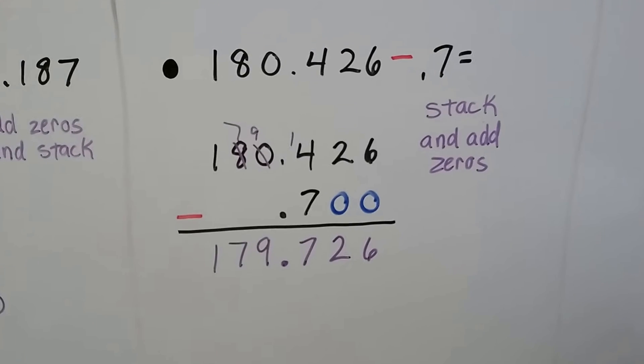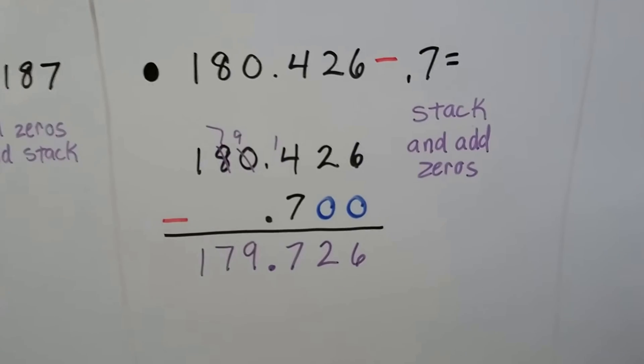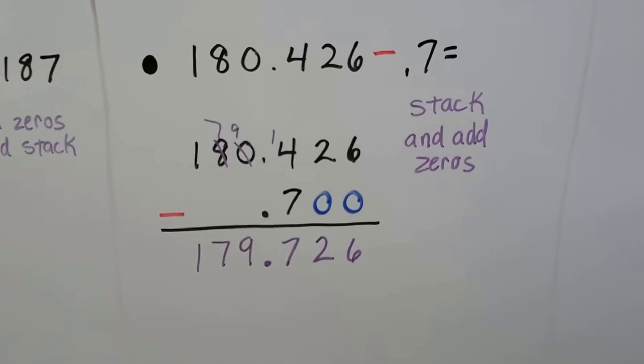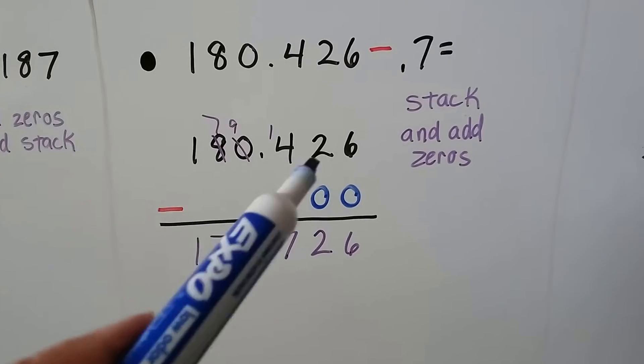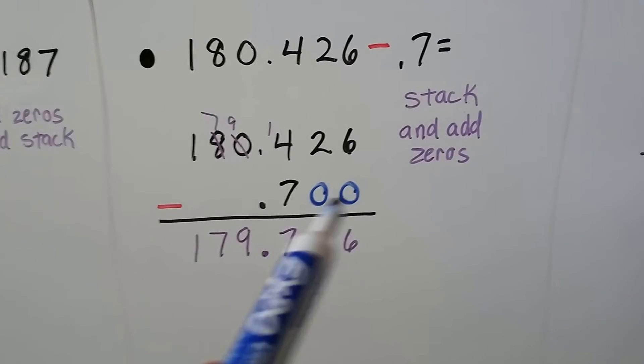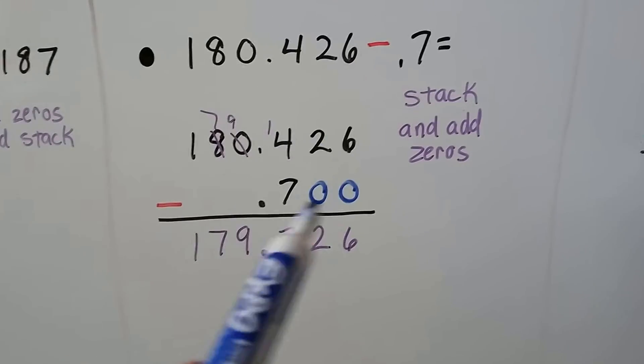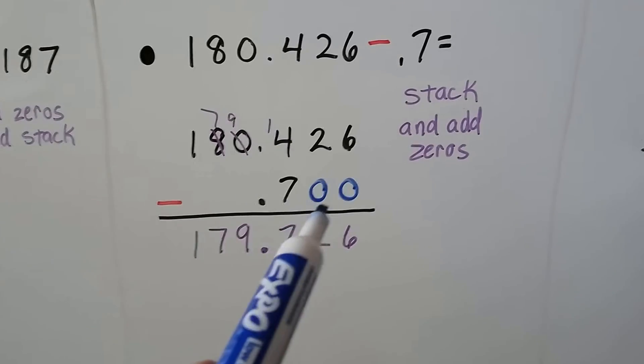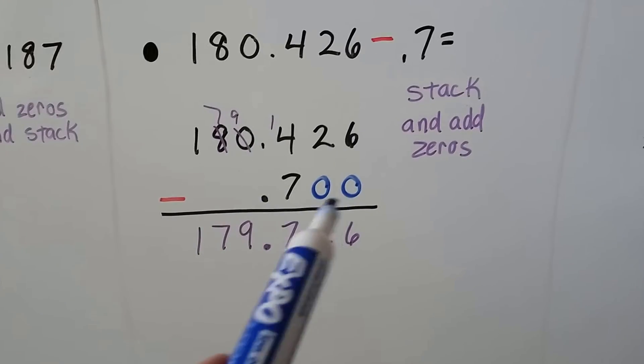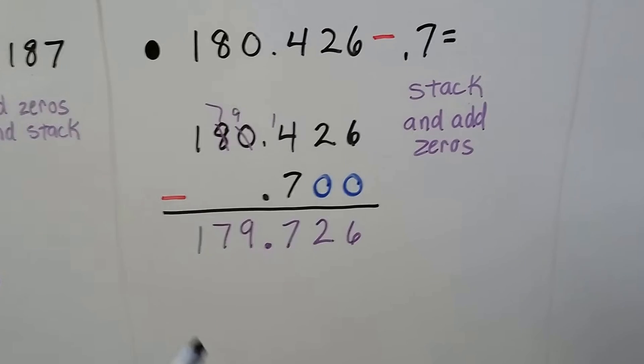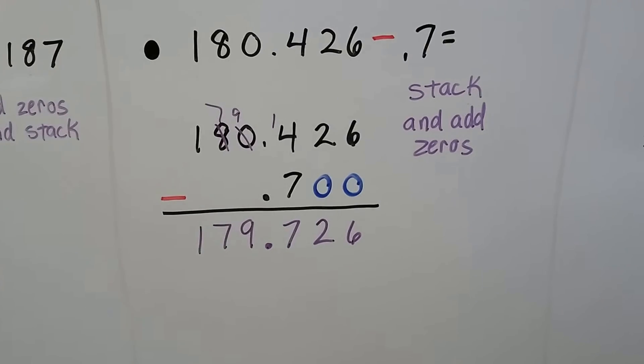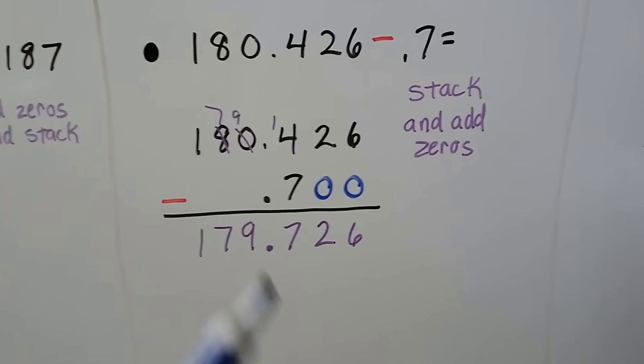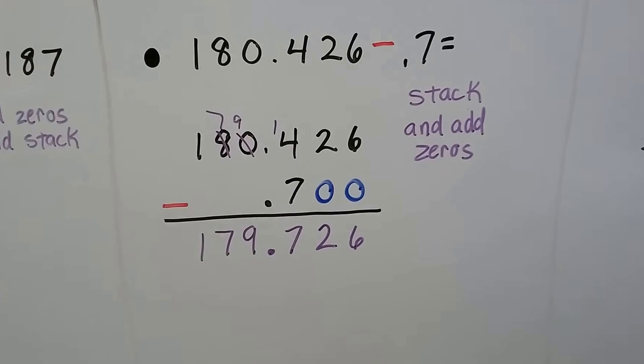Here we've got 180.426 and we're only taking away 0.7. We stack them. We add zeros to the 0.7 to make it 0.700 so that they have the same number of digits on this side of the decimal point and we subtract as we always would with whole numbers. We can regroup and borrow.